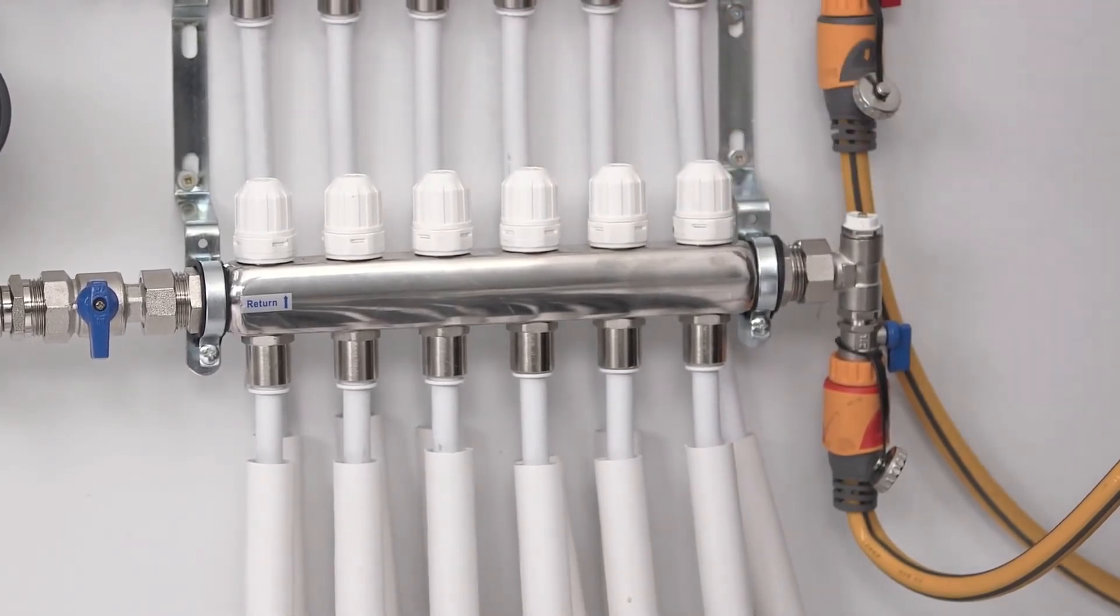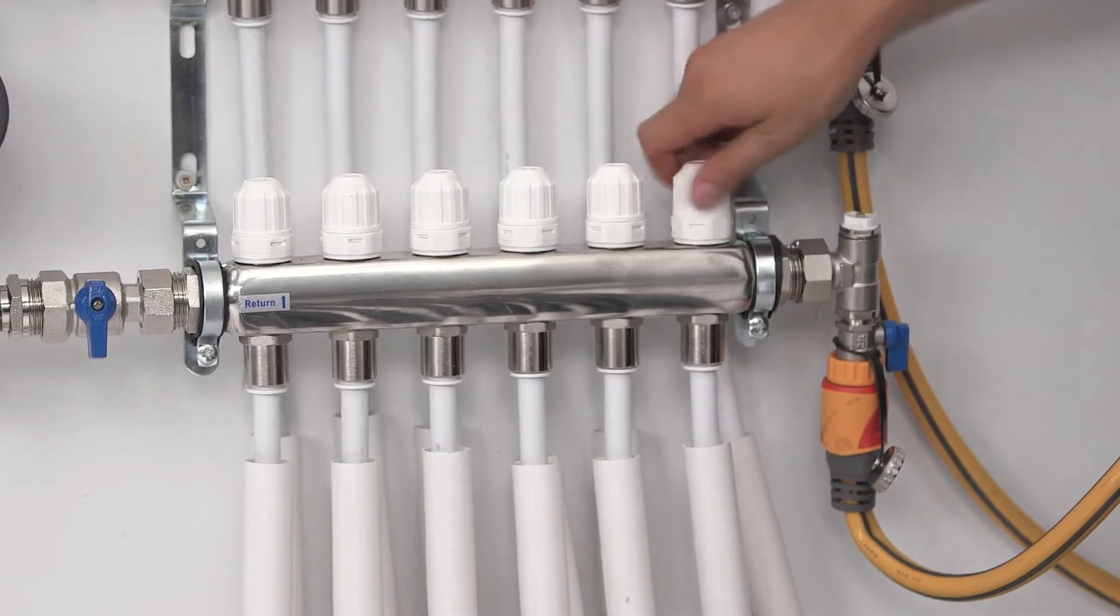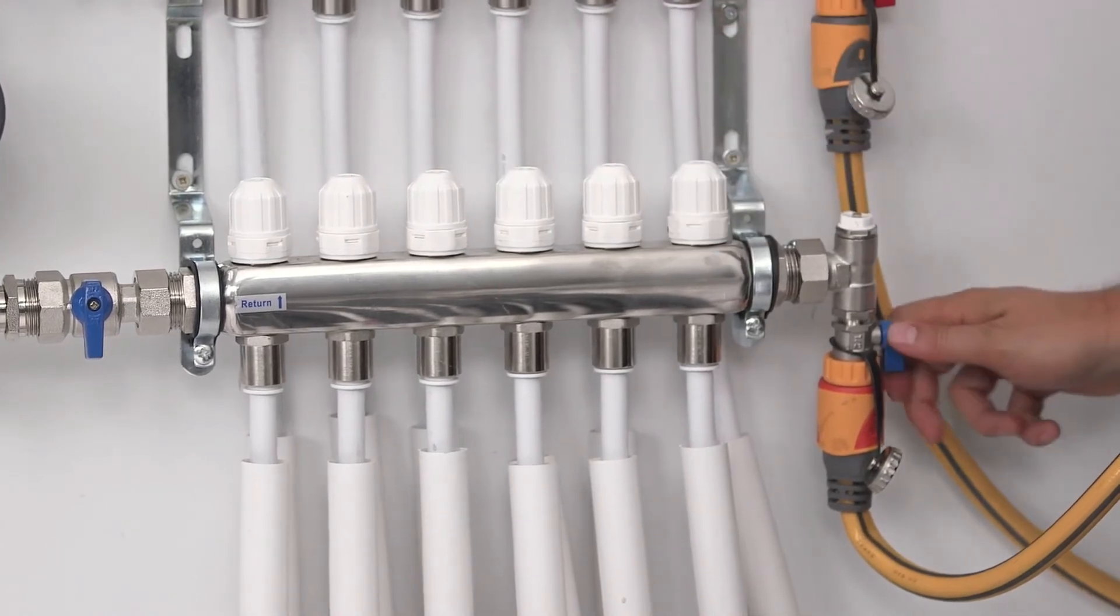When completed, close the bottom valve, shut off the water supply and close the top valve. The system is now ready for pressure testing.